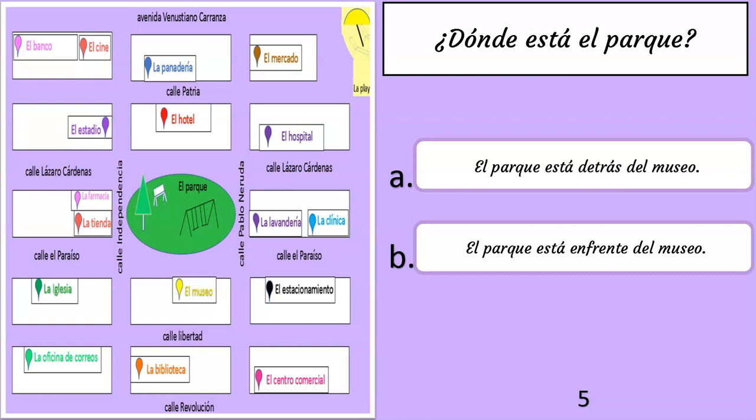¿Dónde está el parque? A: El parque está detrás del museo. B: El parque está enfrente del museo. The correct answer is B: El parque está enfrente del museo.